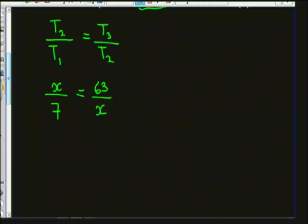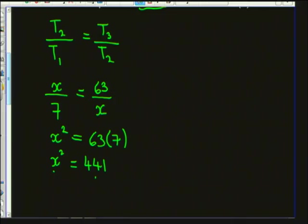Cross-multiplying: x × x = 63 × 7, so x² = 441. This is a quadratic equation. We can make it equal to zero: x² − 441 = 0, or we can take the square root of both sides remembering to take both positive and negative values.